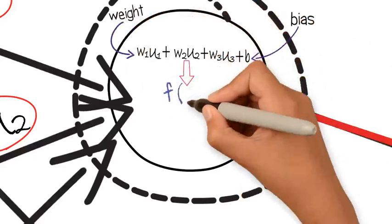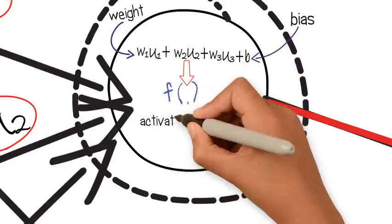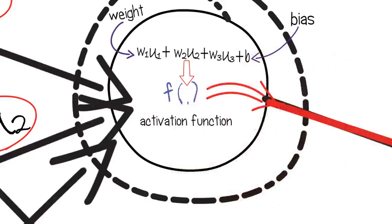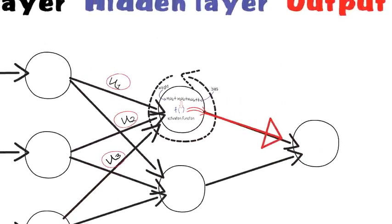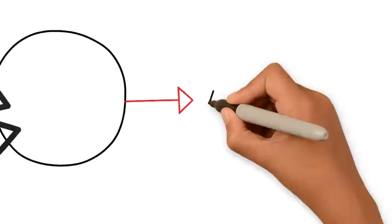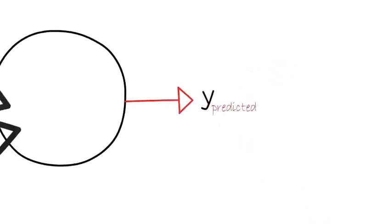This total is processed by a function called the activation function and leaves the node as output. This process proceeds till information reaches the output layer and leaves it as a prediction for the dependent variable.